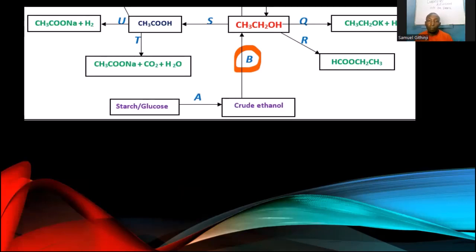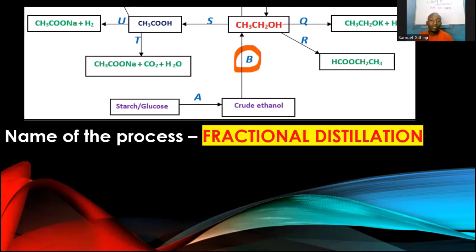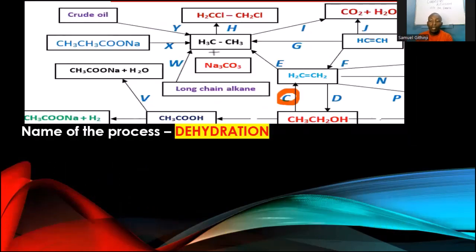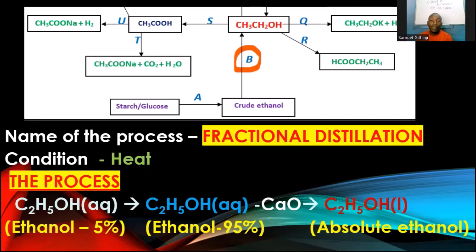Process B converts crude ethanol to pure ethanol — that process is fractional distillation. We need heat. The crude ethanol at 5–10% purity is taken through fractional distillation to obtain about 95% pure ethanol. To remove the remaining 5% water, you can use calcium oxide, which absorbs the extra water to give absolute ethanol — almost 99% ethanol. Other drying agents such as aluminium oxide can also be used.